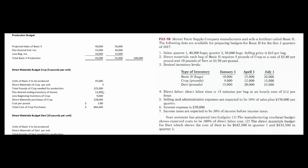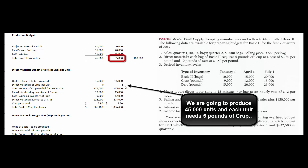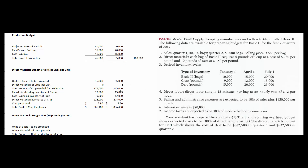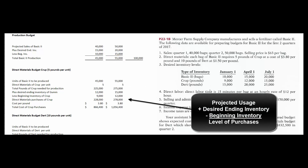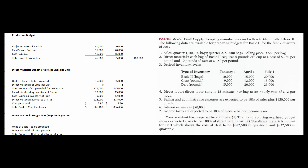Crop costs $3.08 a pound, so our total cost of crop purchases for the first quarter is $866,400. For the second quarter, we're going to produce 55,000 units — at five pounds per unit, we need 275,000 pounds to meet production. Adding desired ending inventory and subtracting beginning inventory, we'll need to buy 278,000 pounds of crop at $3.08 a pound for a total of $1,056,400.